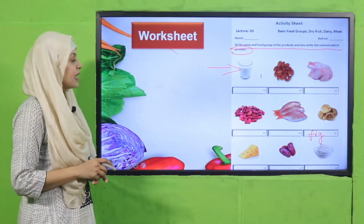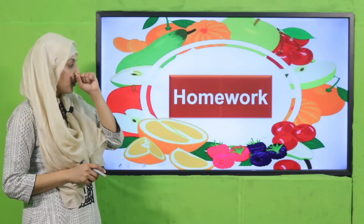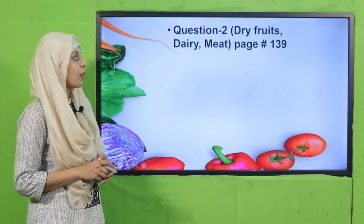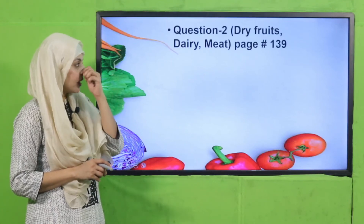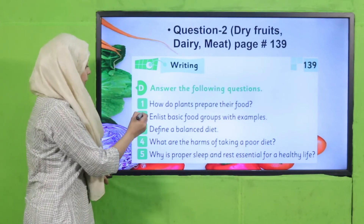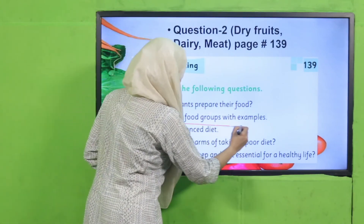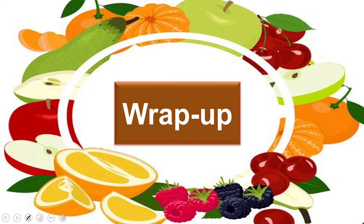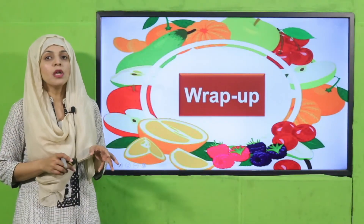I hope everybody has finished. Now we will move forward towards the homework. For homework you will do question number 2 on dry fruits, dairy, and meat on page number 139 - list basic food groups with examples. You will do this in your homework as given on page number 139.